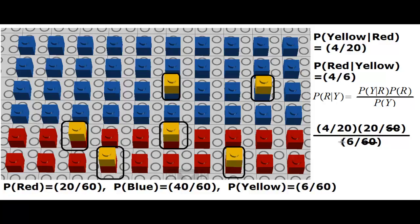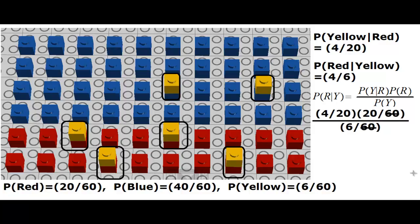So remember, we could cancel this 60 with this 60. We can cancel this 20 with this 20. And what will remain eventually? Exactly the value that you had: 4 divided by 6.